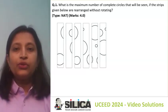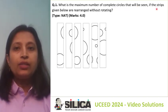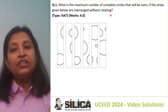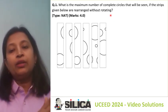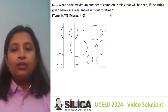This question asks: what is the maximum number of complete circles that will be seen if the strips given below are rearranged without rotating? That means you cannot rotate them — you can rearrange, bringing the left one to the right side and the right one to the left side.